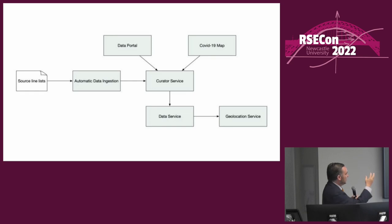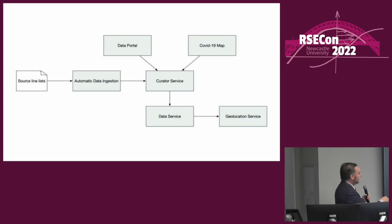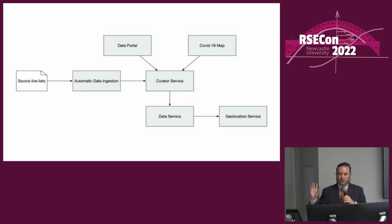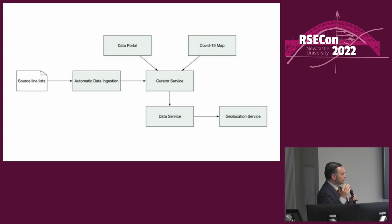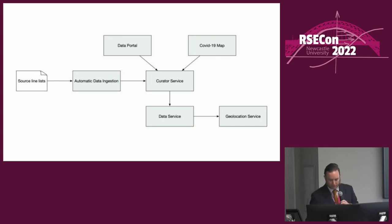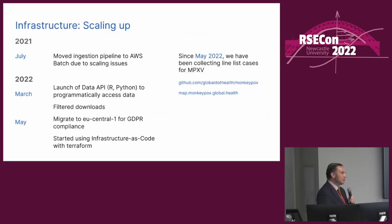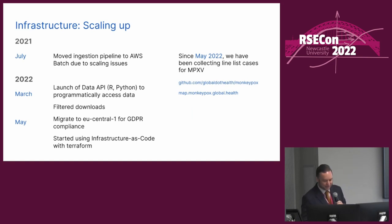Both the tabular portal and the map use the curator service to get their data. The curator service does authentication and validation; the data service does the CRUD activities and then calls out to a separate process that contacts an external provider for geolocation — converting information like 'this case was in Paris' to a latitude and longitude and richer information like 'Paris is a city in France, therefore this case was in France.' There are Parises in other places, and this has been one of the problems we've had.